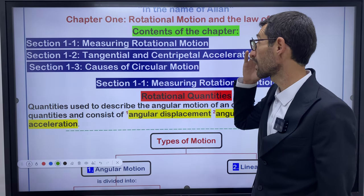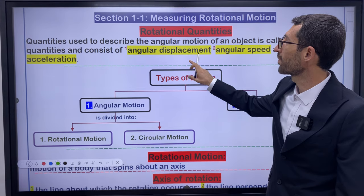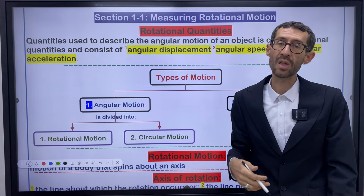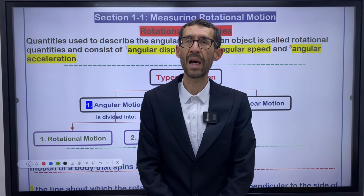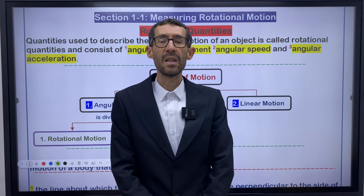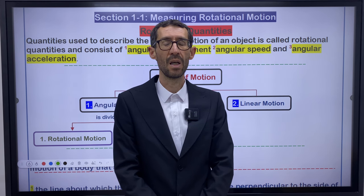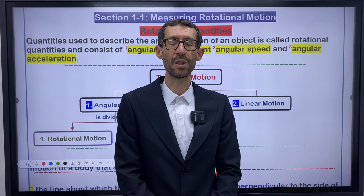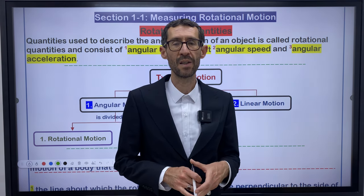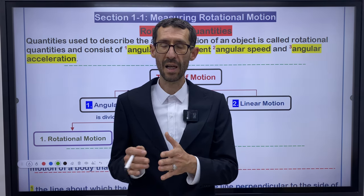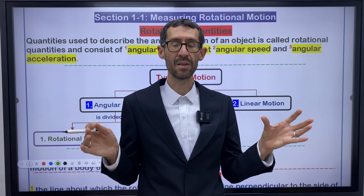Let's start with section 1.1, measuring rotational motion. The first subject is rotational quantities. Before I explain this, I'll give you an introduction about motion in general. In previous years we talked about the simplest type of motion, which is linear motion — motion in one dimension and two dimensions, focusing on motion along a straight line.